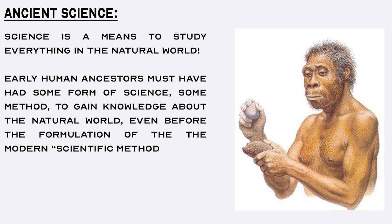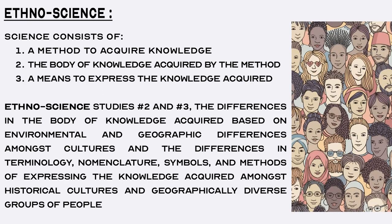Section 1: Ancient Science. Understanding that science is knowledge about the natural world, then everything in the natural world can be studied by science. Since knowledge about the natural world is necessary for survival, human ancestors must have had some form of science to gain knowledge about the natural world even before the formulation of the modern scientific method. With languages and environments differing amongst cultural groups, the expressions, terminology, nomenclature, symbols, and approaches towards gaining knowledge also differed, and studying these differences occurs in the field called ethnoscience.